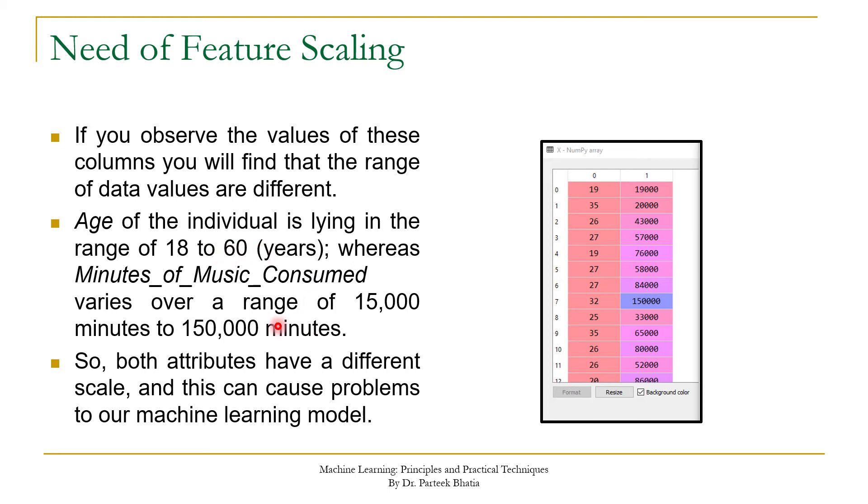You can clearly see that both input attributes are at different scales. While for age we have values in two digit numbers, for the next column we have values in five and six digit numbers. So when we build our model on this dataset, the column which has values in the higher range will get more biased as compared to a column which has very small values.